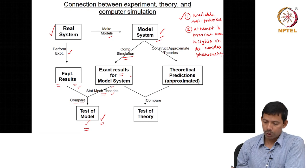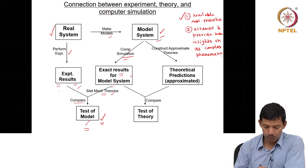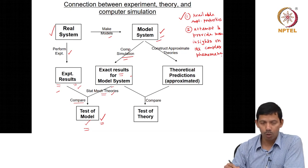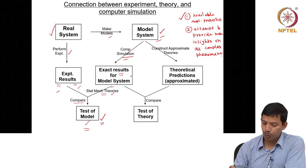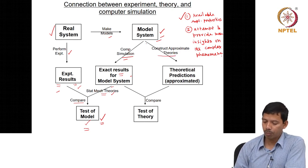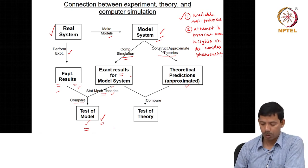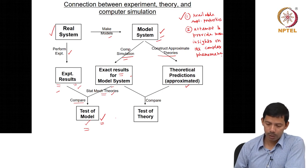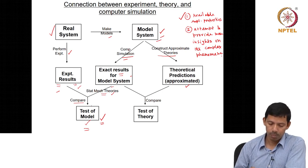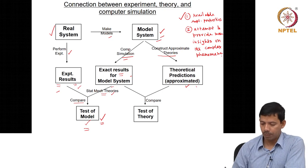Computer simulation technique also makes a bridge between experiment and theory. Once you make the model and see that it is doing pretty good by matching with the experimental data, you can also construct approximate theories on the model and get theoretical predictions. If you then compare your theoretical predictions with the exact results from computer simulation, that is a test of theory. In this sense, computer simulation makes a bridge between experiment and theory.